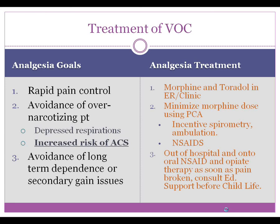We normally use a morphine and Toradol bolus in the ER or clinic to help determine whether or not the patient really needs to come to the hospital. Then we'll use morphine via a PCA pump as soon as a child is old enough to rely on that. Prior to that age, we'll generally use either bolus morphine or a continuous infusion. We also use non-steroidal adjuvants such as Toradol or ibuprofen, along with incentive spirometry and scheduled ambulation to prevent atelectasis.